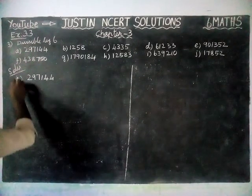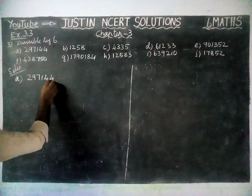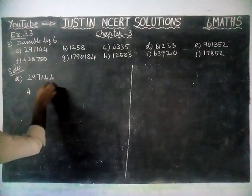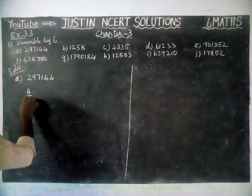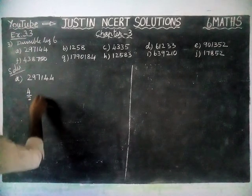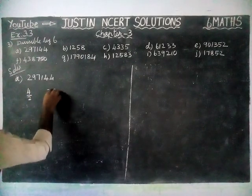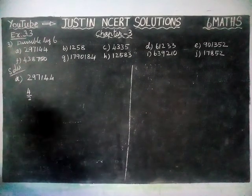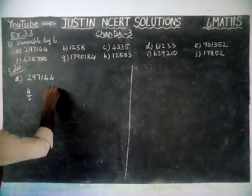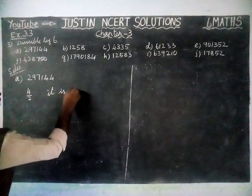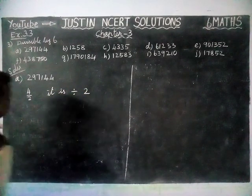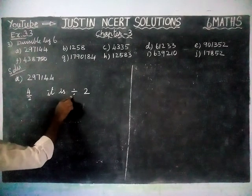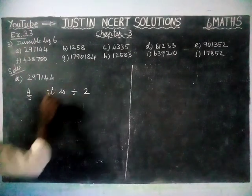Now we are going to check it for option A. Here, the last digit, the 1's place is 4. This 4 is divisible by 2. Therefore, the given number is divisible by 2. Next, we will write it in the shortcut — it is divisible by 2.